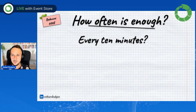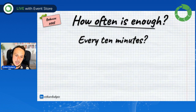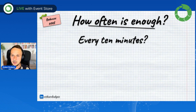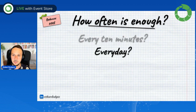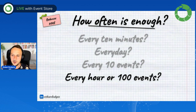How often is enough? Can you define how many operations you have in your system, or which data is stressed the most? And if you can define it, is the load constant, or does it happen on some schedule or randomly? So how often would be enough — every 10 minutes, every day, every 10 events, every hour, or 100 events? A bit more complex logic: let's say either every hour, or if 100 events happened earlier than that hour, then make the snapshot again.